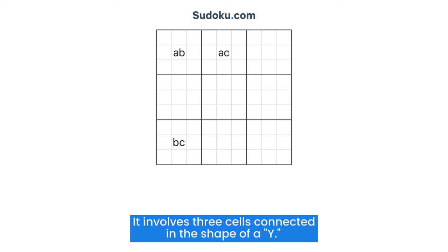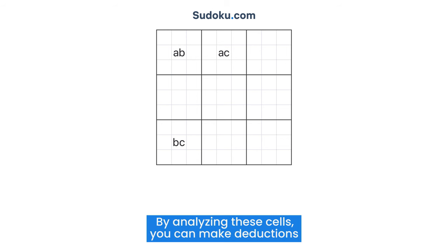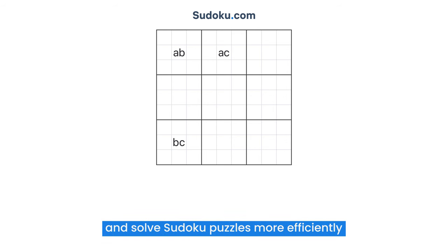It involves three cells connected in the shape of a Y. By analyzing these cells, you can make deductions and solve Sudoku puzzles more efficiently.